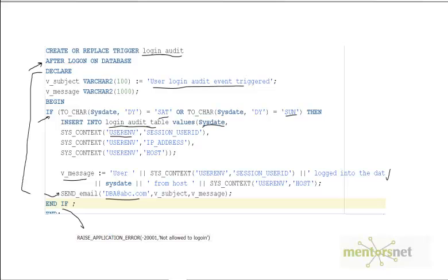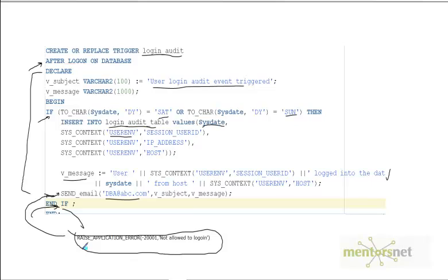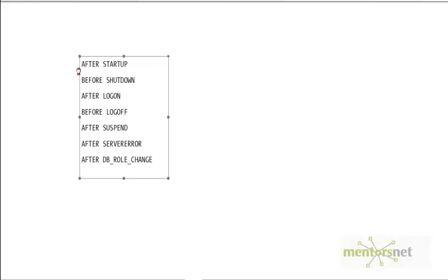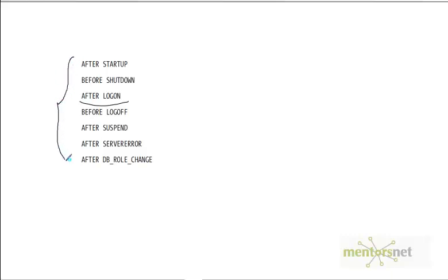If you write that raise_application_error statement inside the if condition, we log the violation and the user is not allowed to continue logging on to the database. This is called a system trigger because the triggering point is a system event. You can also fire triggers after startup, before shutdown, and other system events.